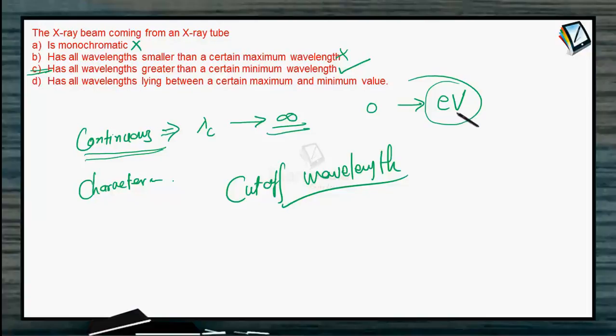So there is a particular value of the wavelength below which the wavelength is not possible. So it is the cutoff wavelength.